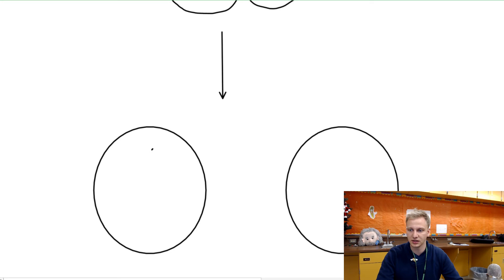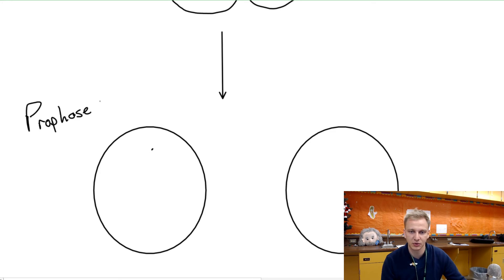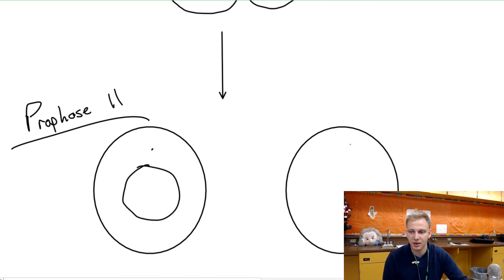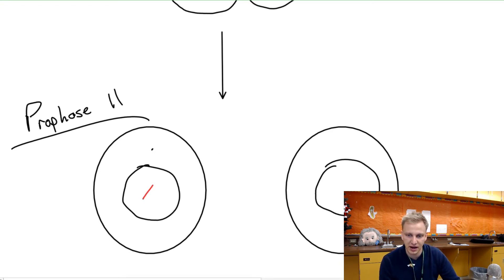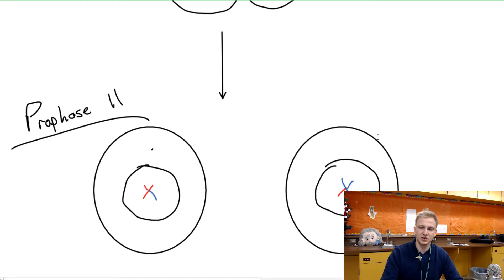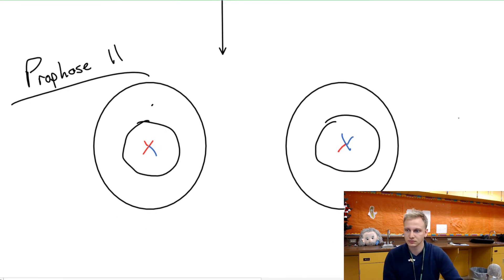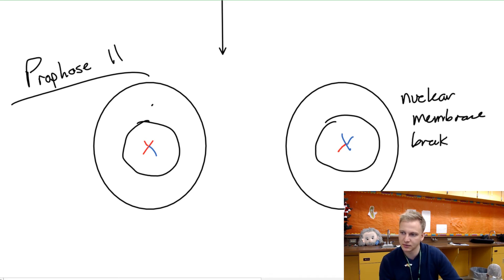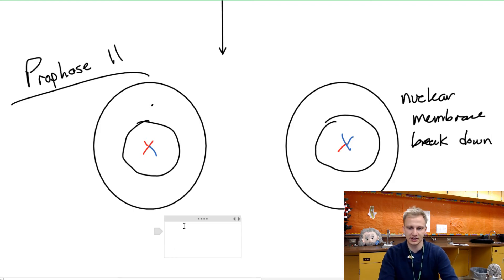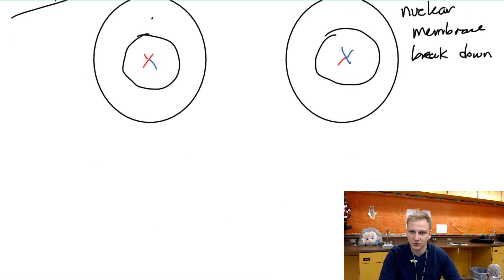After telophase 1 and cytokinesis we now have two different cells. We enter prophase 2. In prophase 2, the nuclear membrane is still present but it's going to start to break down. Each of our two chromosomes is now in its own individual cell, and that nuclear membrane will begin to dissolve.